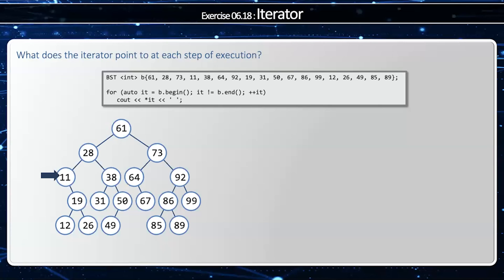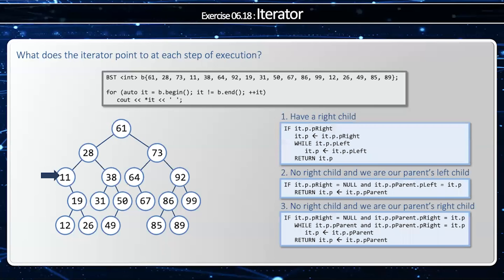From here, we have to use the plus-plus operator. I have a right child, so I'll do case one. I'm going to go right one node, which is to 19, and then go as far left as I can, and that brings me to 12. Once I'm at 12, I have no right child and no left child, but I am my parent's left child, so I do case two. I go up to my parent, and that's 19.